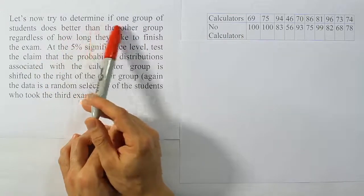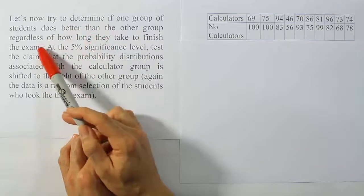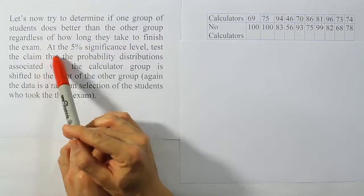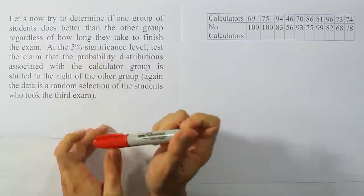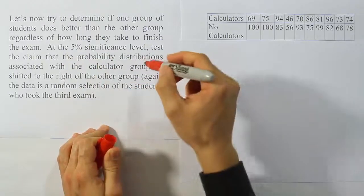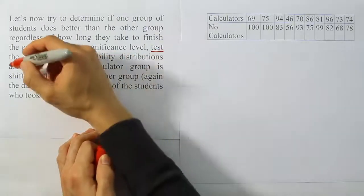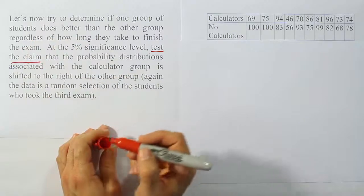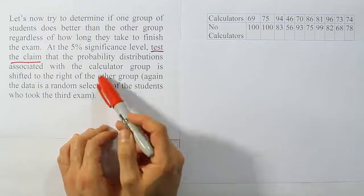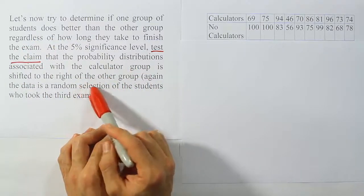Okay, so it says, let's now try to determine if one group of students is better than the other group, regardless of how long they take to finish the exam, at the 5% significance level, test the claim. So we see that it's a hypothesis test, right? Test the claim that the probability distributions associated with the calculator group is shifted to the right of the other group.